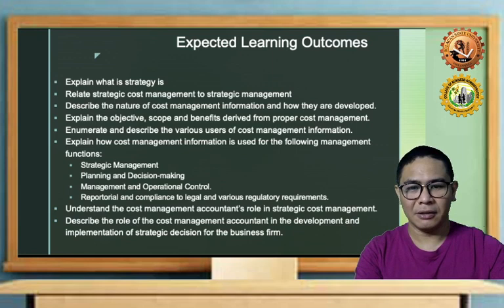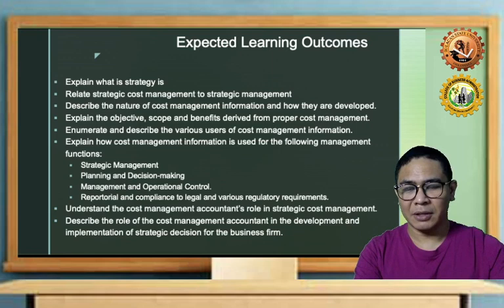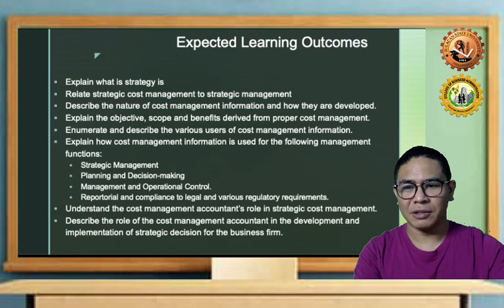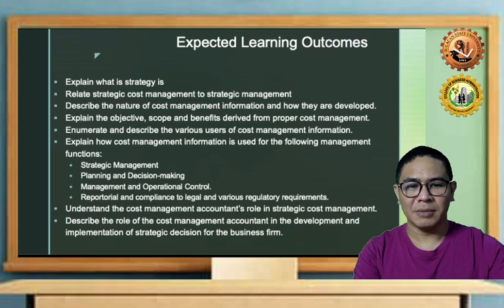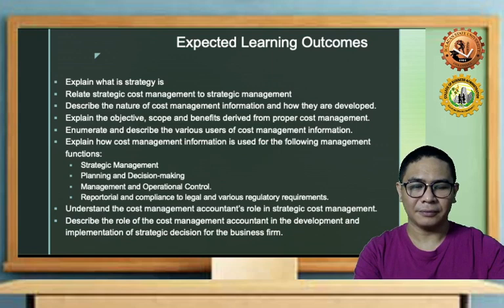These are the expected learning outcomes upon completing this video recording: explain what is a strategy; relate strategic cost management to strategic management; describe the nature of cost management information and how they are developed; explain the objective, scope, and benefits derived from proper cost management; enumerate and describe the various users of cost management information; explain how cost management information is used in strategic management, planning and decision making, management and operational control, and reportorial compliance to legal requirements; and understand cost management accountants' role in strategic cost management and in the development and implementation of strategic decisions.